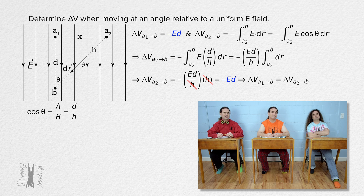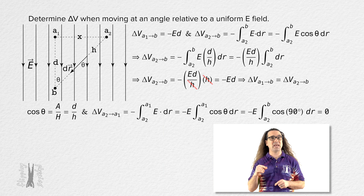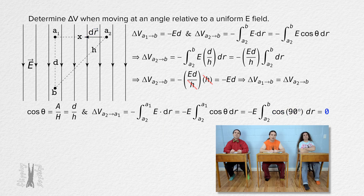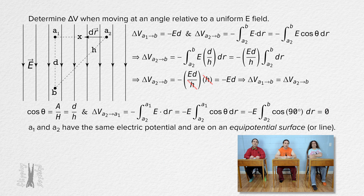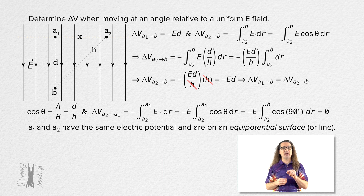That is the same as the electric potential difference from point a1 to point b. Why is that? That is because the electric potential difference from point a2 to point a1 equals zero. The angle between the electric field and the infinitesimal displacement dr, which points from a2 to a1, is 90 degrees, and the cosine of 90 degrees equals zero. In other words, points a1 and a2 have the same electric potential — they are on an equipotential surface. We just showed that every point along the line created by points a1 and a2 has the same electric potential, making that an equipotential line.